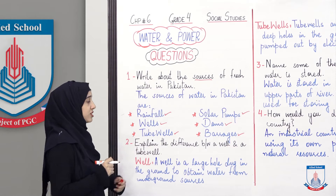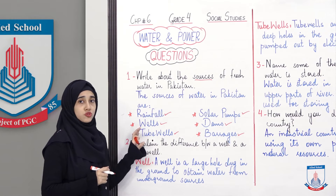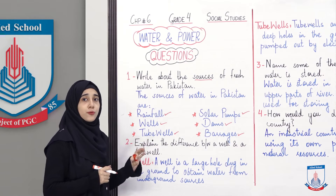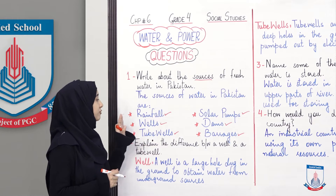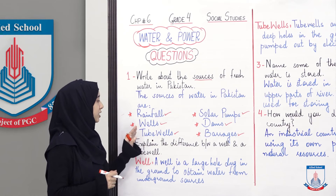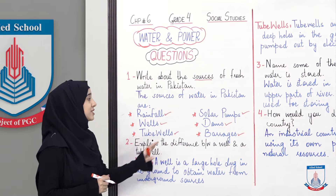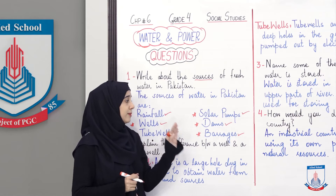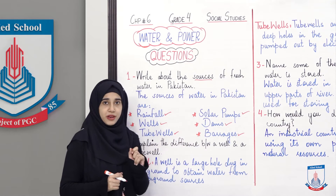So, in total there are six water sources agar aapko fresh water required ho. We talked about rainfall, wells, tube wells, solar pumps, dams and barrages.